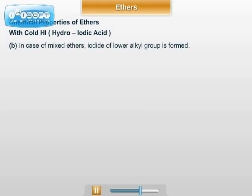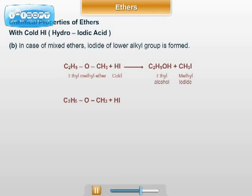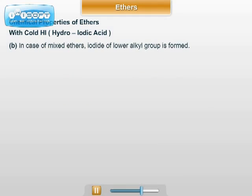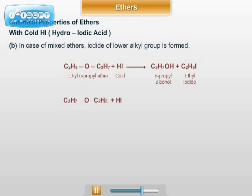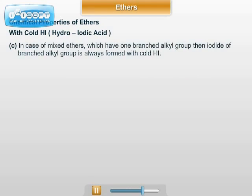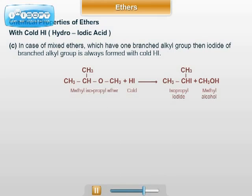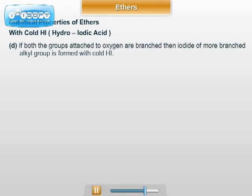Number 2: in the case of mixed ethers, the iodide of the lower alkyl group is formed. Number 3: in the case of mixed ethers which have one branched alkyl group, the iodide of the branched alkyl group is always formed with cold HI. Number 4: if both the groups attached to oxygen are branched, then the iodide of the more branched alkyl group is formed with cold HI.